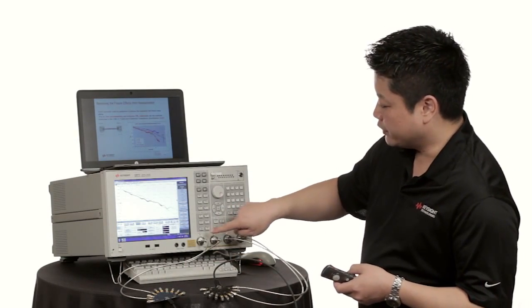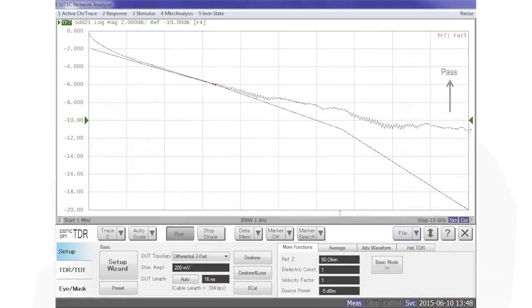So what we want to do there is apply some de-embedding to remove the effects of the fixture, extend the calibration reference plane to the end of the fixtures, and measure the true performance of the device.